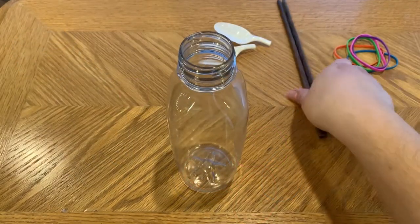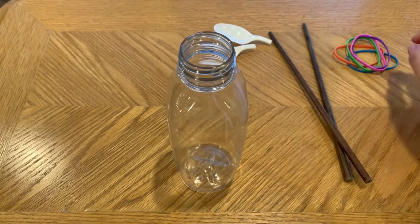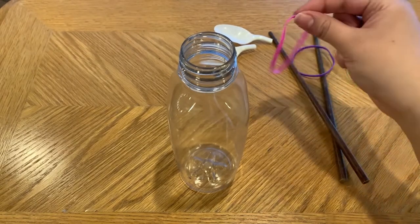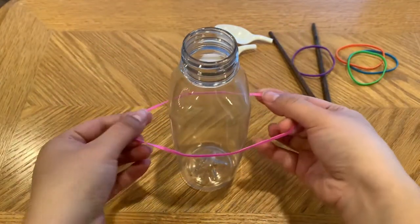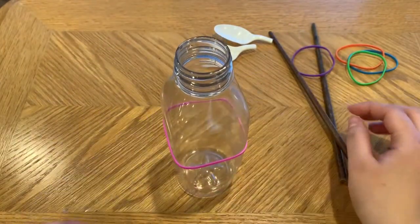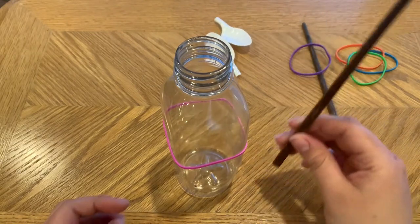To start, I'm going to take a rubber band and place it around the water bottle. This is going to help us keep the chopsticks in place while we add the rest of the rubber bands.